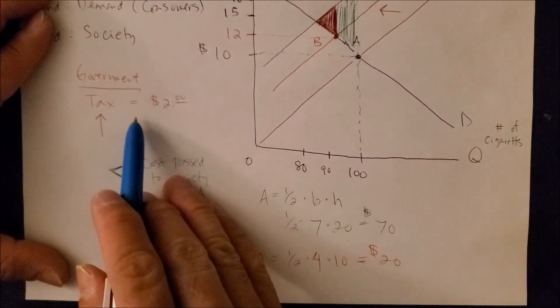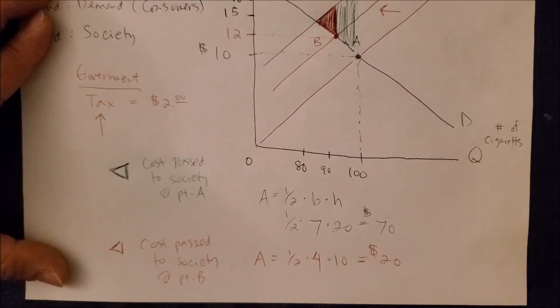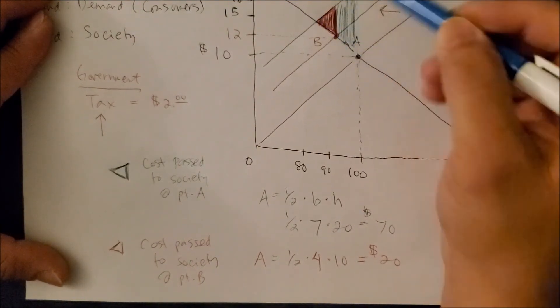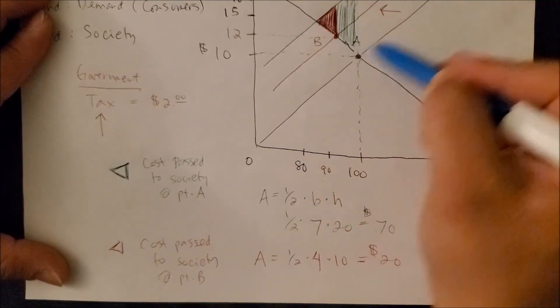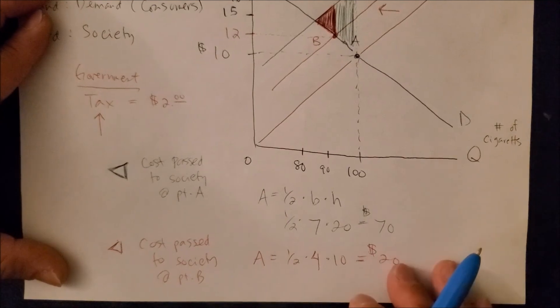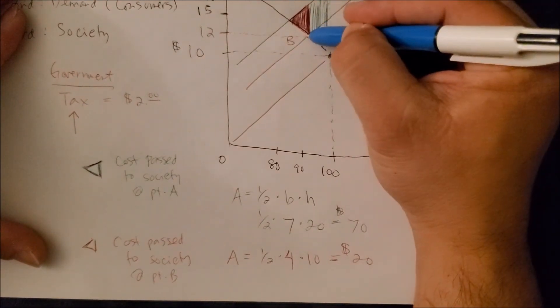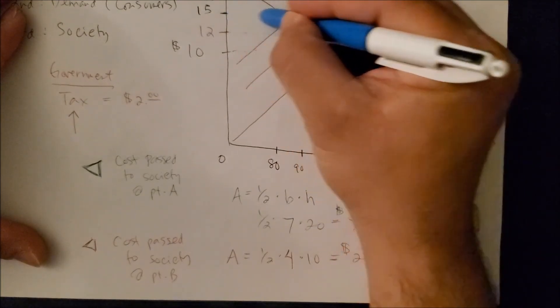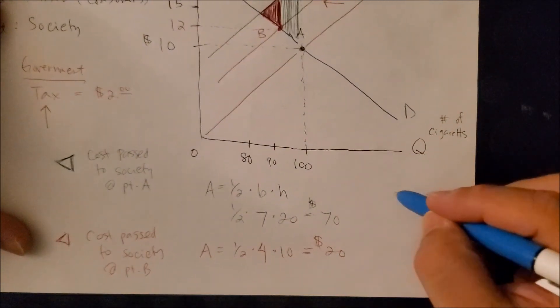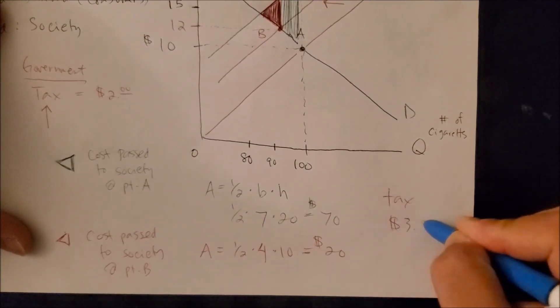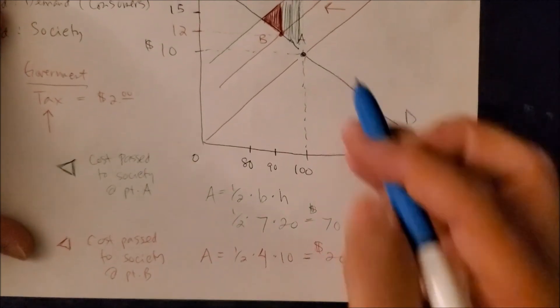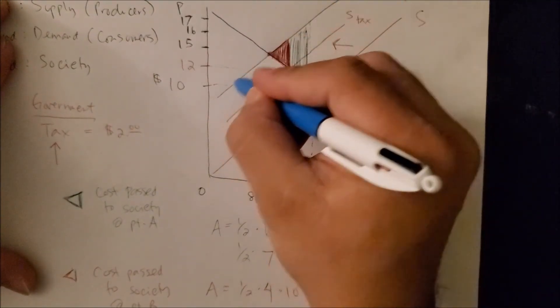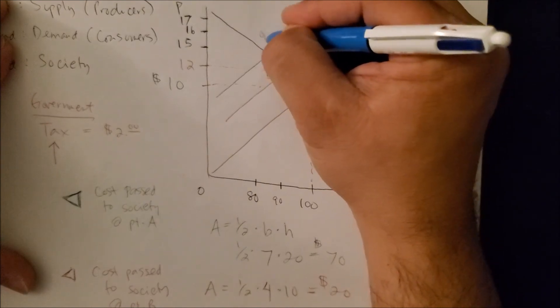So in essence, a tax is going to help decrease, minimize, and hopefully eliminate the negative externality that is created by both the consumers and the producers of cigarettes. Now to really eradicate this externality, we need to tax one more time. Supply needs to shift to the left one more time at 15. So to solve this, there has to be a tax of three more dollars in order to get to where we want to be, which is this point here, the demand curve and supply society, which would be the optimal point.